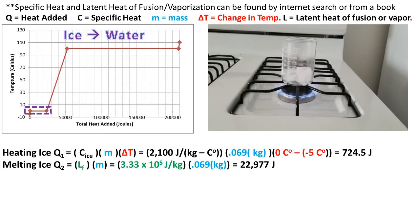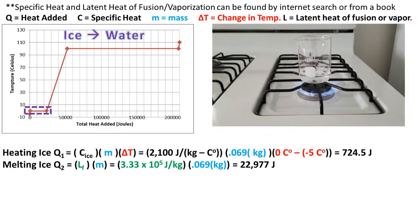Now the ice will have to undergo a phase change from ice to liquid water. This will require energy. We will need to know what the latent heat of fusion is, which is the amount of energy per kilogram of ice to change from a solid to a liquid. The latent heat of fusion is 3.33 times 10 to the 5th joules per kilogram of ice. After multiplying the latent heat of fusion times the mass of ice, we get 22,977 additional joules of heat energy needed to convert the ice to a liquid.